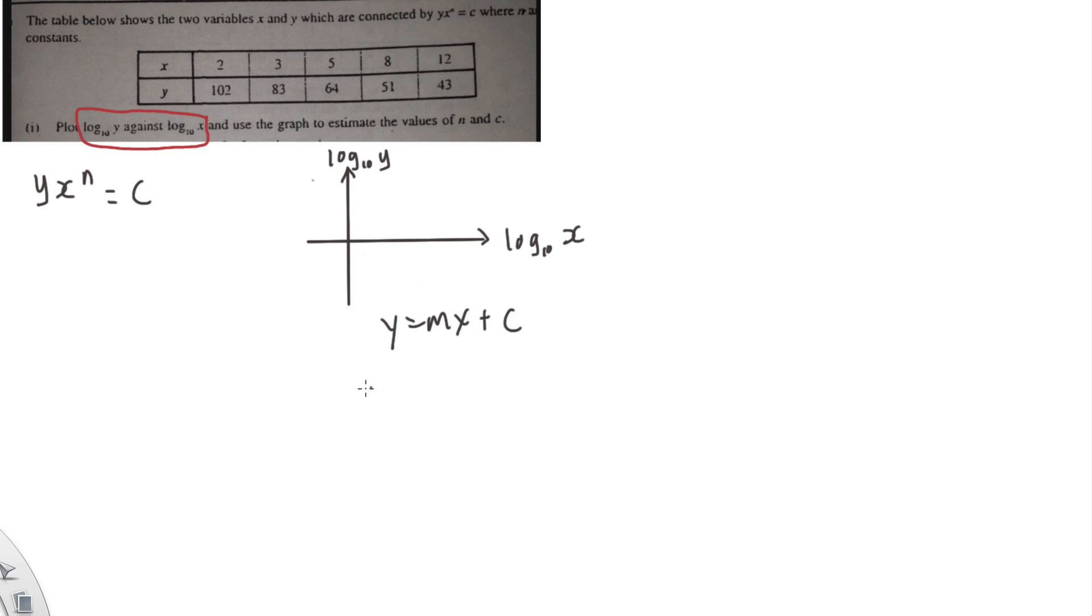Okay, so from here I know my y actually is log 10 y and then I know my x will going to be log 10 x and then plus c. Obviously m and c is a constant. So it basically gives me some idea this is my y and this is my x.